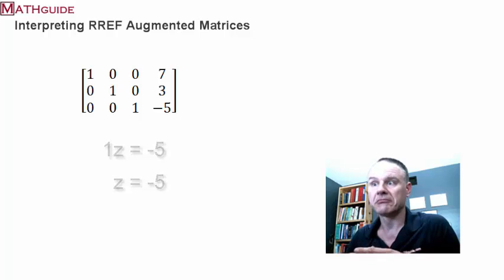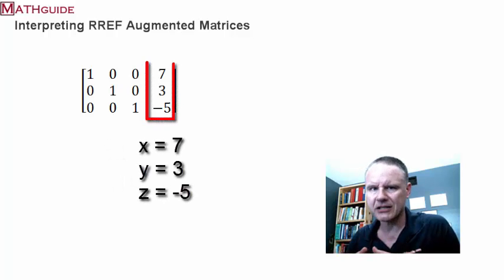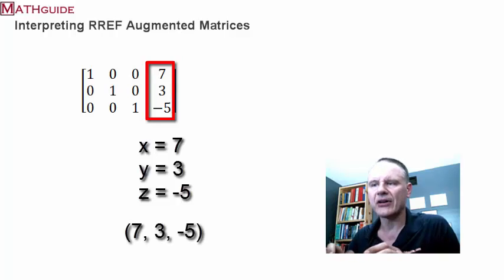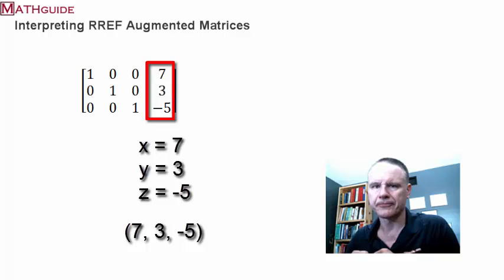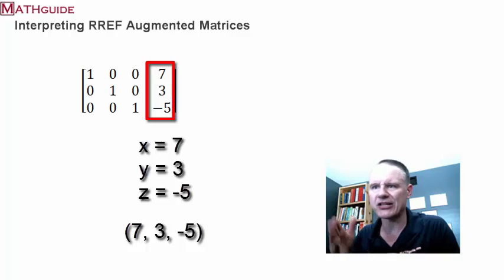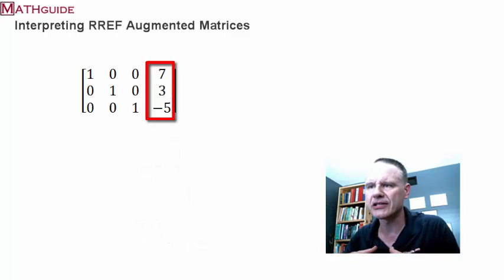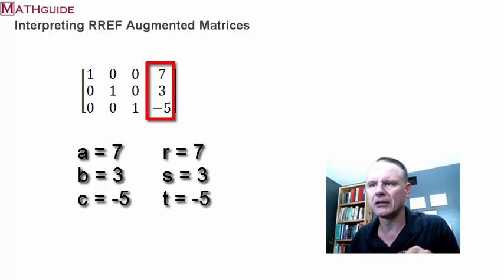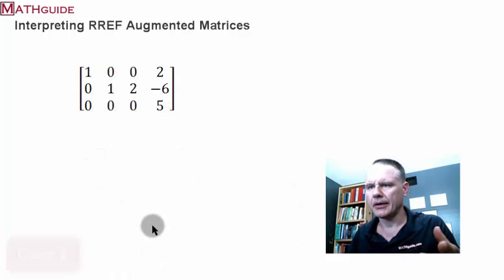So your answer is x is seven, y is three, z is negative five. You have your ordered triplet. Sometimes we write the triplet as (7, 3, -5). I'm just using the standard variables x, y, and z, but of course you could do this problem with any variable. That's how you interpret what that cluster of numbers — called an augmented matrix — means.